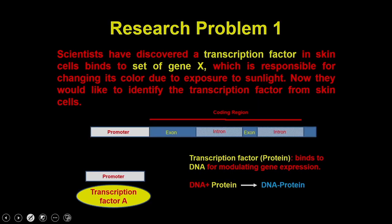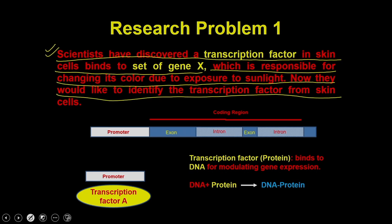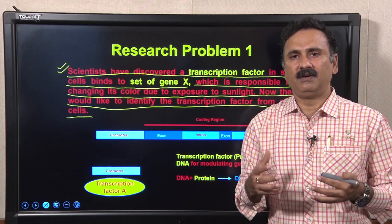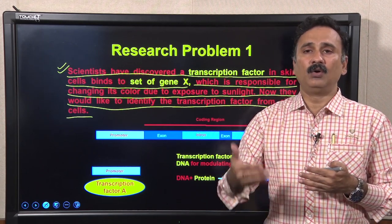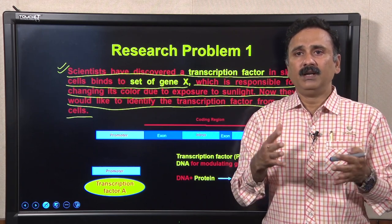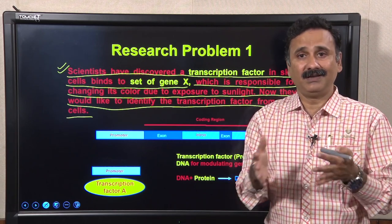The first problem today is one we have discussed before: scientists have discovered a transcription factor in skin cells that binds to gene X, which is responsible for changing its color due to exposure to sunlight. They would like to identify the transcription factor from the skin cells, and they are also interested in how the DNA and this transcription factor interact with each other.